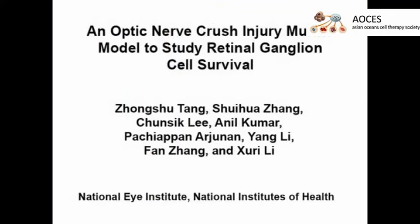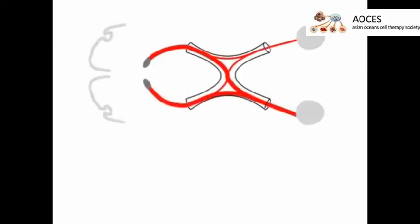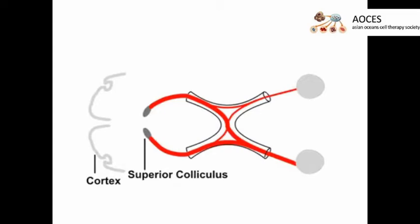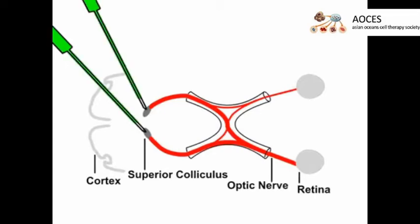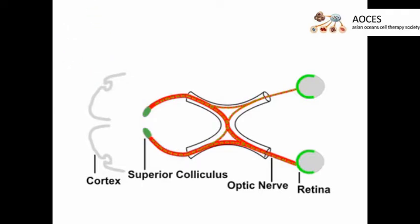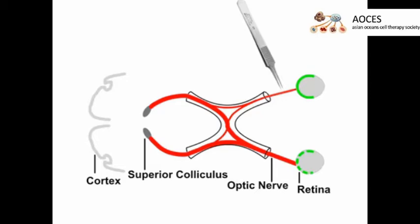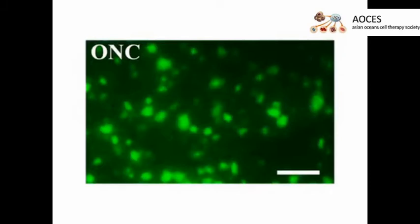This procedure demonstrates the optic nerve crush injury and subsequent analysis of retinal ganglion cell survival in a mouse model. This is achieved by injection of a fluorescent dye into the superior colliculus on day one. The dye is retrogradely transported to the retinal ganglion cells to label this cell population. As a second step, an optic nerve crush injury is made on day four to cause optic nerve degeneration, which will lead to a gradual death of the retinal ganglion cells. On day eleven, the retina is dissected in order to investigate retinal ganglion cell survival. The result shows the number of remaining viable retinal ganglion cells based on a count of fluorogold labelled cells using fluorescence microscopy.